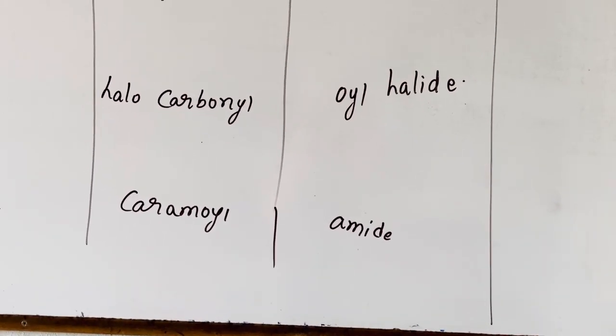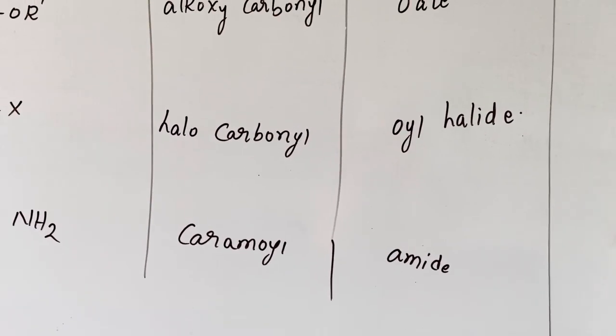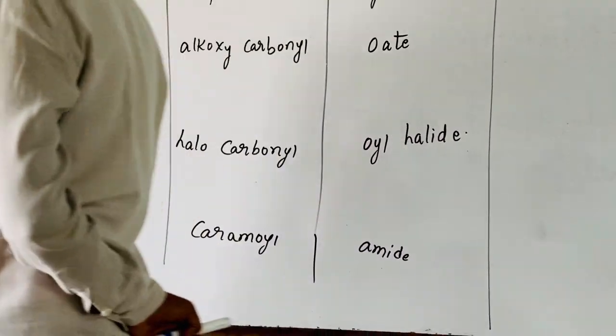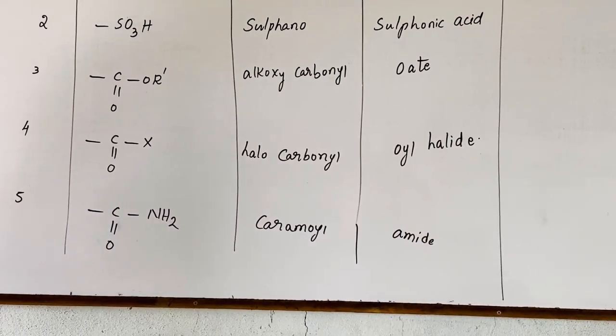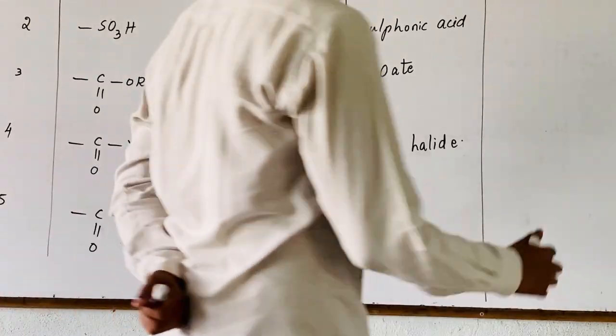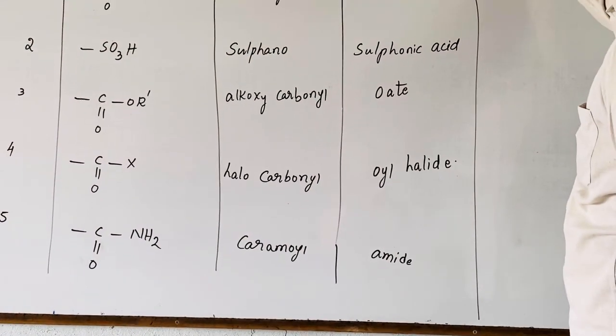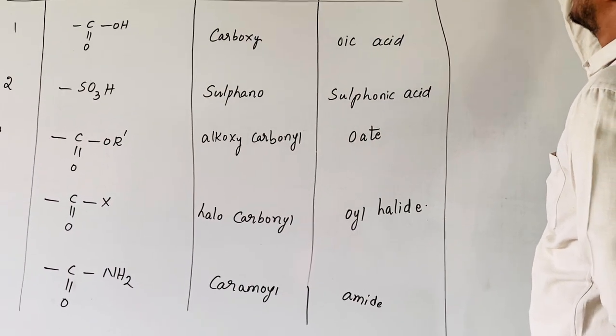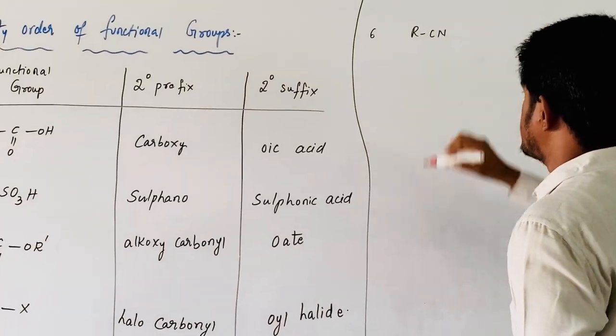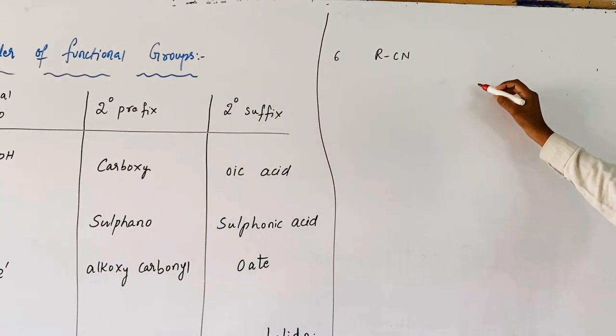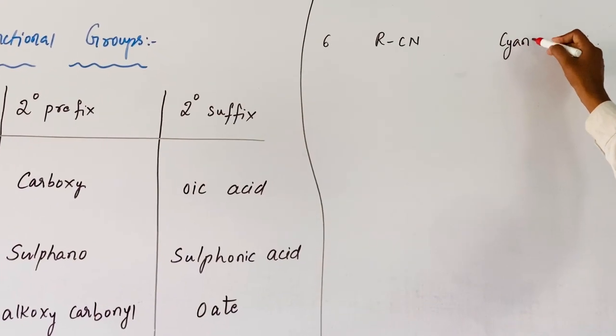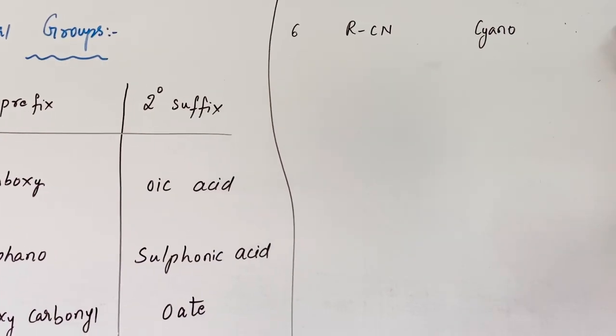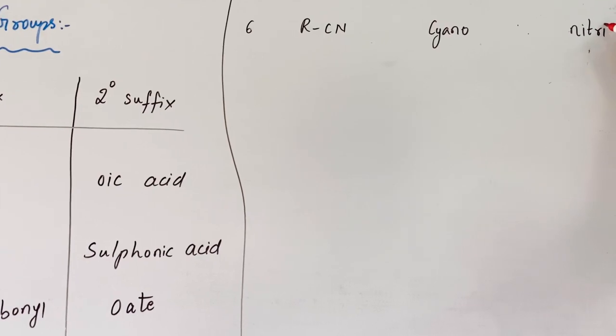Now coming to sixth one, that is nitrile. Sixth one is R-C-N as the functional group. Secondary prefix is cyano, and secondary suffix is nitrile.